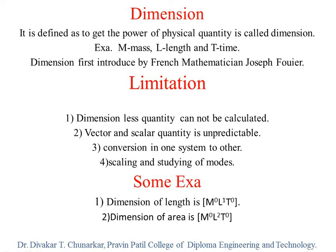Second example: area. The unit of area is metre square. Metre is the unit of length, so it is L squared. There is no mass and no time. So the dimension of area is written as M to the power 0, L to the power 2, and T to the power 0.